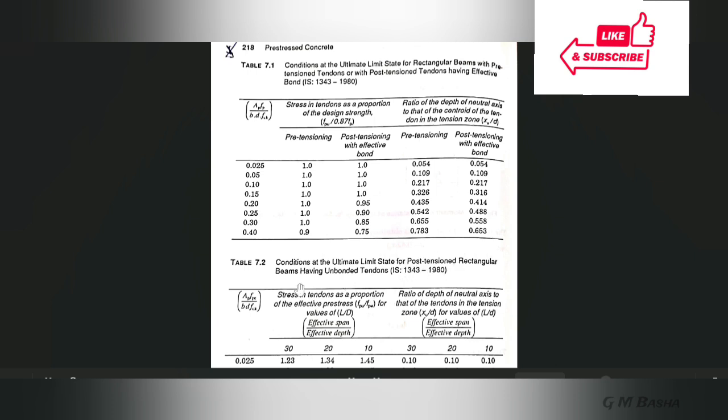One will be related to effective bond and second will be related to unbonded tendons. Here it will be given for post-tensioned rectangular beams. For here it will be given both for pretensioning and post-tensioning. The ratio will be given as tensile stress as a proportion of the design strength fpu by 0.87 fp, both for pretensioning and post-tensioning with respect to Ap fp by bd into fck. Similarly in this table we have to find out the depth of neutral axis to the centroid of the tendon, that is xu by d, both for pretensioning and post-tensioning.